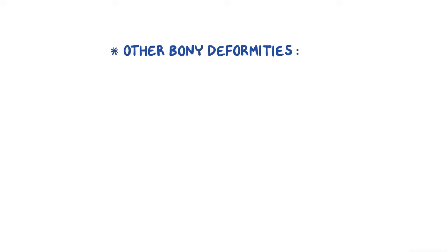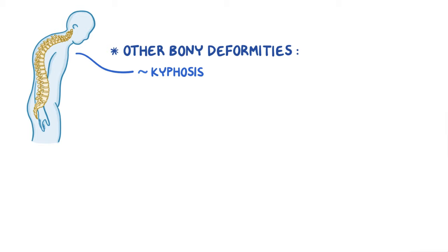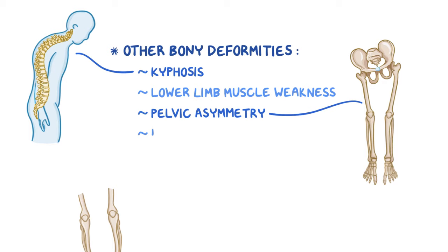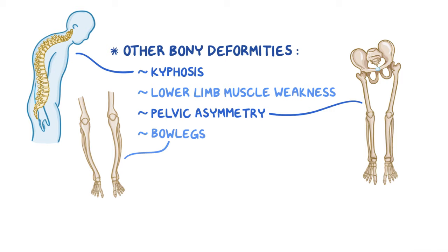Other bony deformities from Paget's disease of bone include kyphosis, which is an excessive curvature of the spine making a person face down to the ground, lower limb muscle weakness from misshapen vertebrae compressing the spinal cord, and pelvic asymmetry. It can even lead to bow legs if the femurs get too weak to support a person's weight, and they begin to bend over time. If the parts of the bone involved in a joint become affected, it can result in arthritis or joint inflammation.